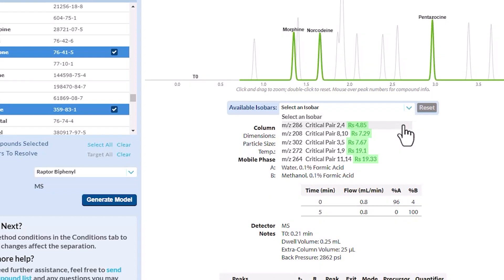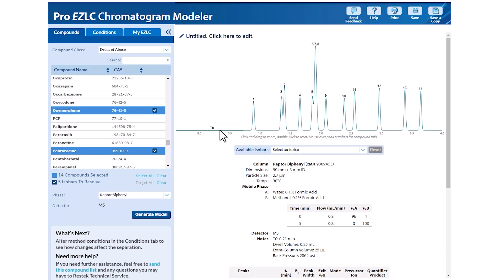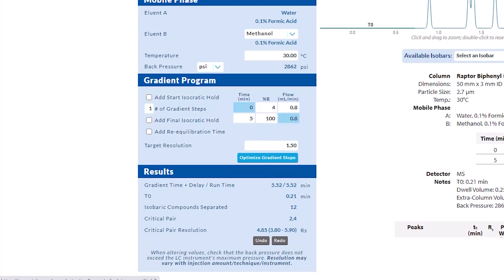The resolution of all critical pairs is above the accepted value of 1.5, giving us an opportunity to shorten our model's runtime without sacrificing separation. In the conditions tab on the left, you can optimize your separation by choosing column dimensions, inputting any volume effects, changing your mobile phase, adjusting temperature, and editing your gradient program.